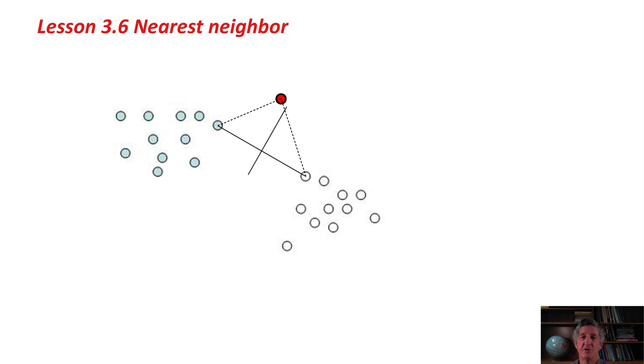Here is just a little picture of instance space, two-dimensional instance space. We've got the blue points and the white points, two different classes, yes and no, for example. Then we've got an unknown instance, the red one. We want to know which class it's in, so we simply find the closest instance in each of the classes and see which is closest. In this case, it's the blue class, so we would classify that red point as though it belonged to the blue class.